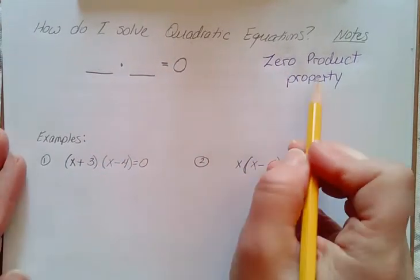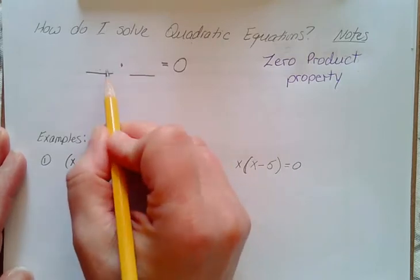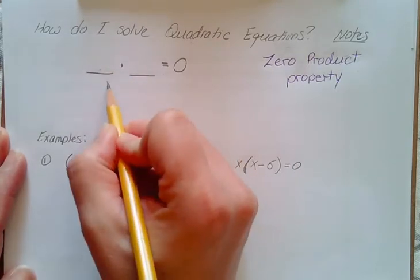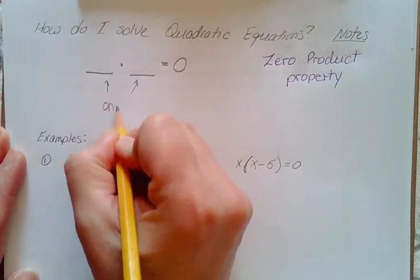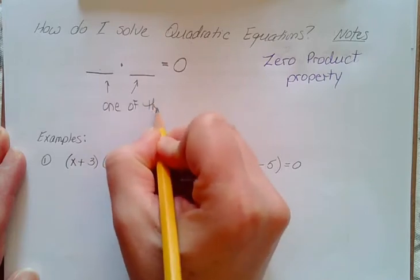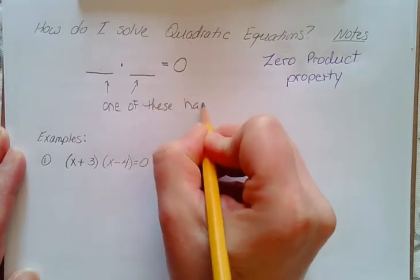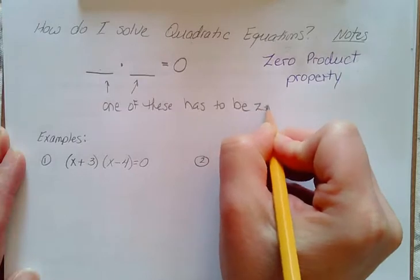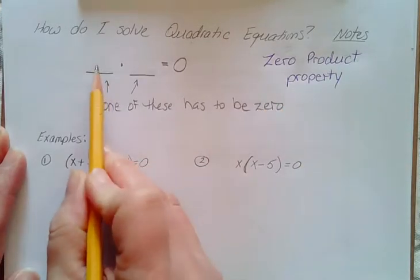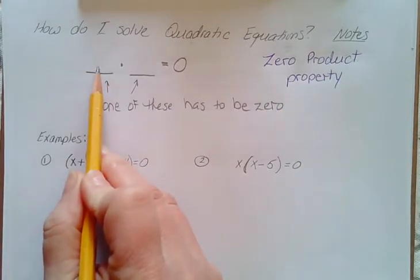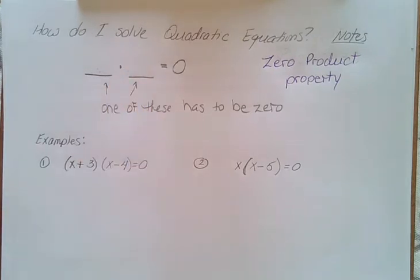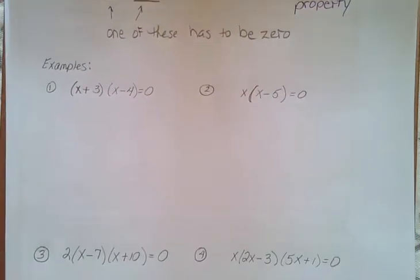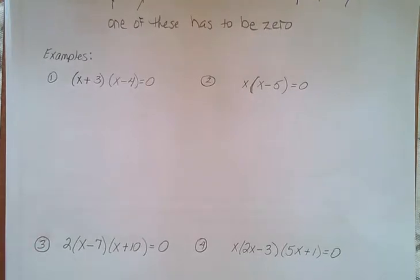So basically the zero product property says that if you are multiplying two numbers, one of these numbers has to be 0 at least. Either the first one can be 0 or the second one can be 0, but one of them has to be 0. So let's use that as we have these factored quadratics.